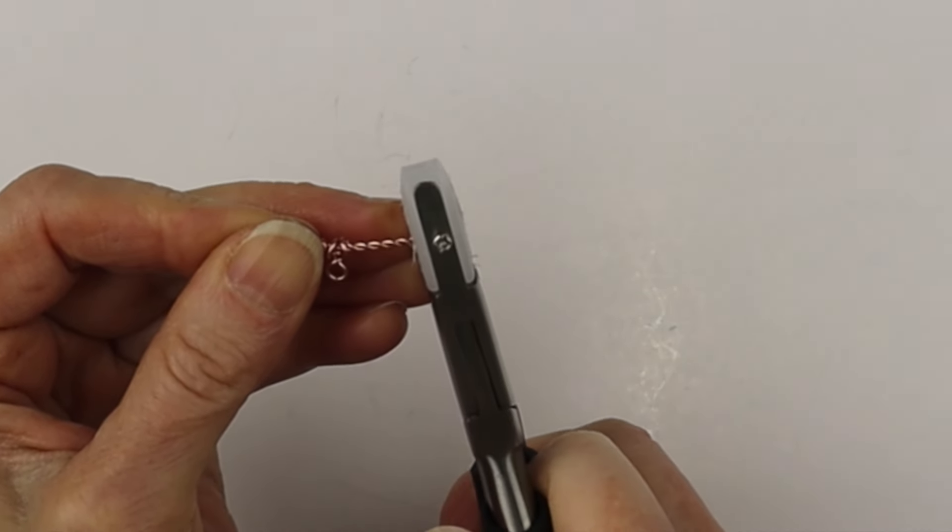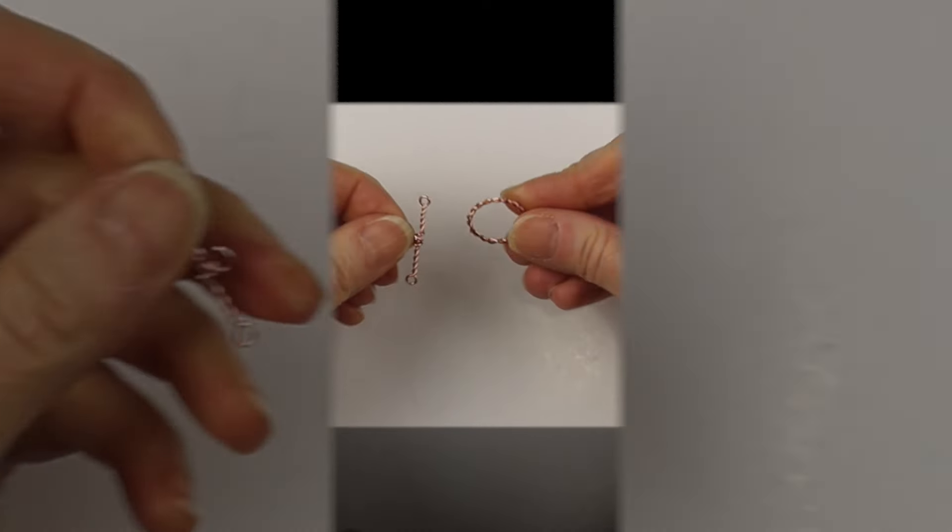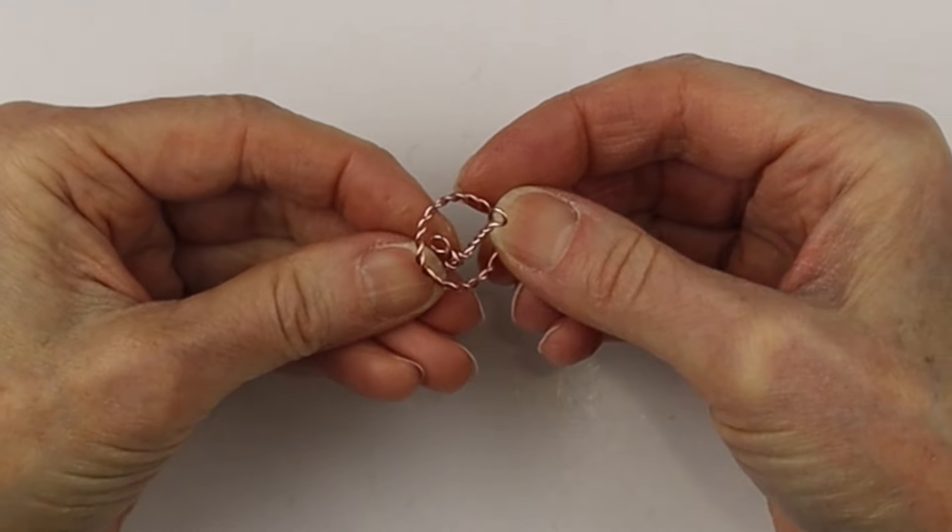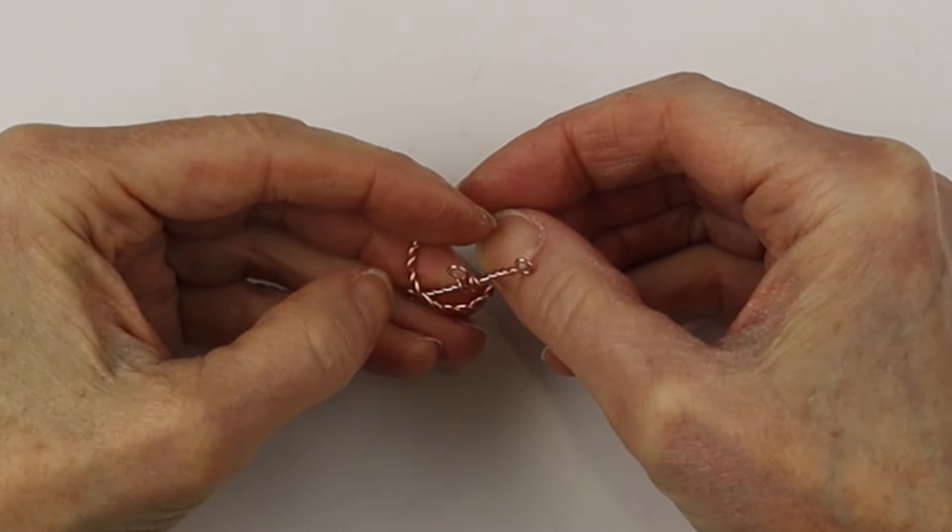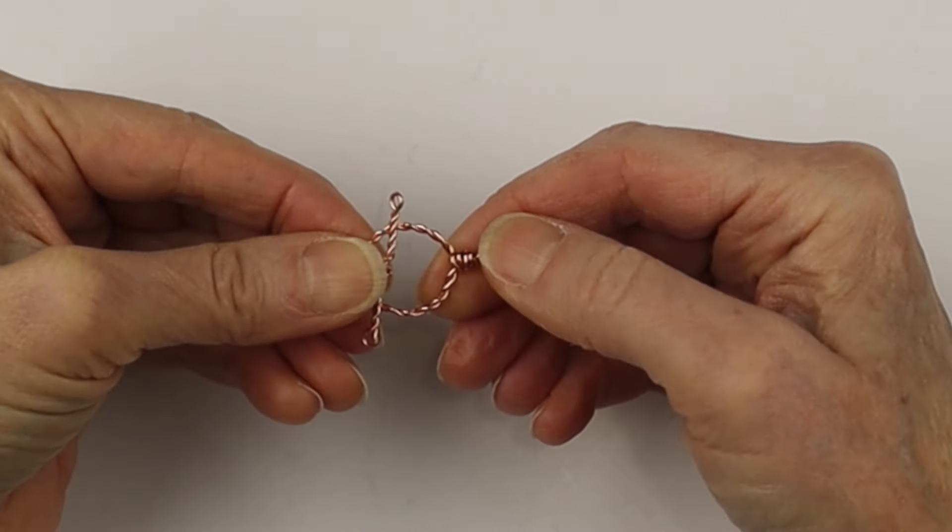And there we have our toggle. So once it is on a chain or a beaded cord you'll just be able to slip it through there, and there you go.